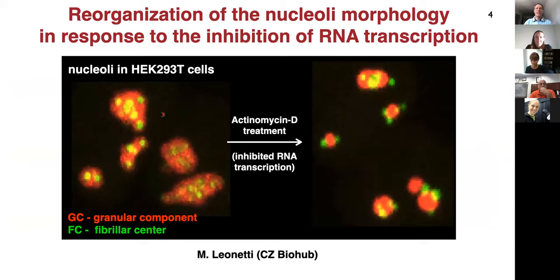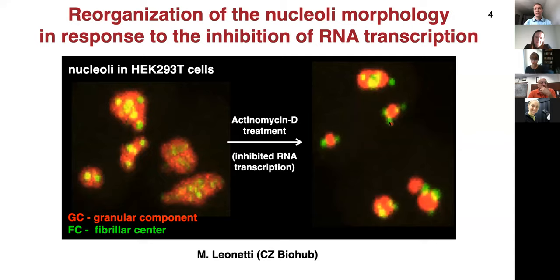For example, if we take nucleoli — these are experiments from Manuel Leonetti's group at the Chan Zuckerberg Biohub — these are nucleoli in human cells. If you treat them with actinomycin D, which inhibits RNA transcription, you will find that these green fibrillar centers migrate from the inside towards the surface of these granular components. So interestingly, we can actually change morphology.